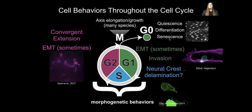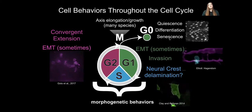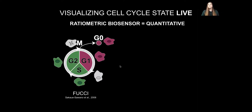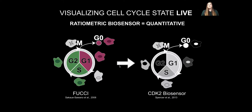In order to understand how the cell cycle regulates these behaviors, we have to be able to visualize cell cycle state live. Most of you are probably familiar with the FUCCI-based system, a two-component colorimetric sensor that allows you to distinguish G0/G1 versus S/G2; however, the delineation between G0 and G1 and the border between S and G2 cannot be determined. So we turned to a ratiometric biosensor — a CDK2 biosensor developed in the Meyer lab — with substantial subsequent work in the Spencer lab examining this sensor in tissue culture cells.